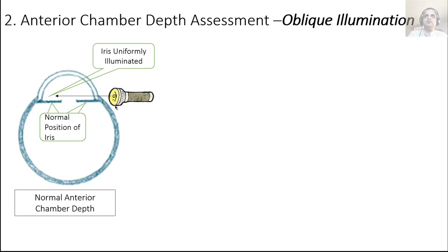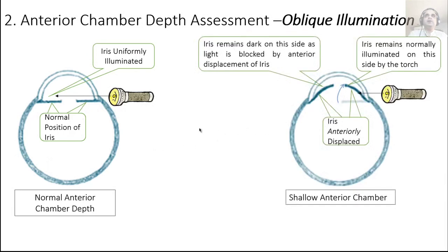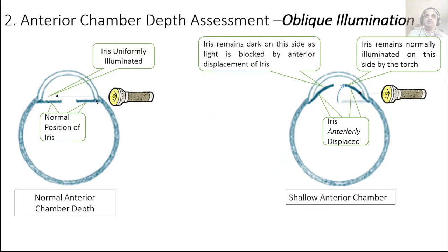What we're trying to do is to see how much of the iris is illuminated when light shines from the side perpendicularly. As the iris displaces anteriorly, the anterior chamber becomes shallow — its depth decreases because the anterior chamber sits between the iris and cornea. This also blocks light from reaching the iris on the opposite side, giving a dark shadow indicating the anterior chamber is now shallow.